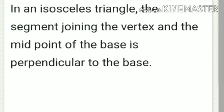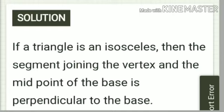Third: in an isosceles triangle, the segment joining the vertex and the midpoint of the base is perpendicular to the base. Your answer is: if a triangle is isosceles, then the segment joining the vertex and the midpoint of the base is perpendicular to the base. Use if with the first sentence and then with the second sentence.